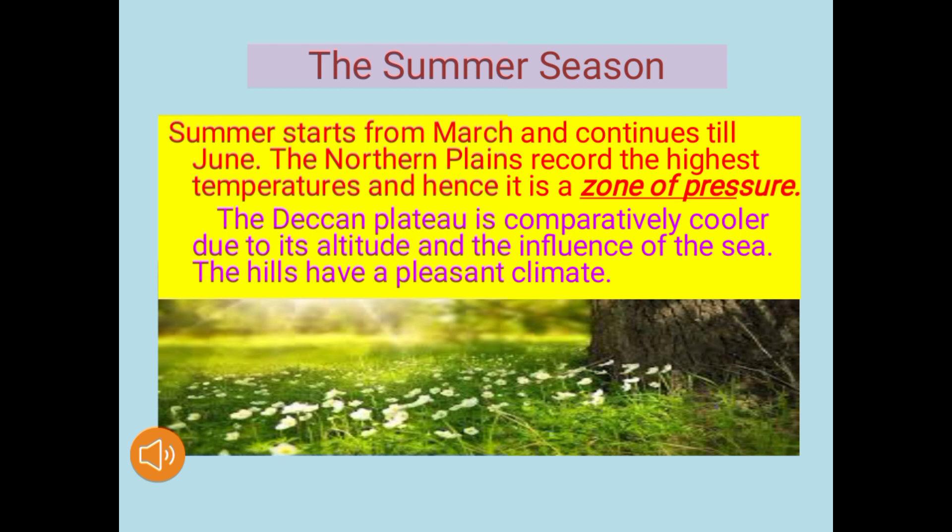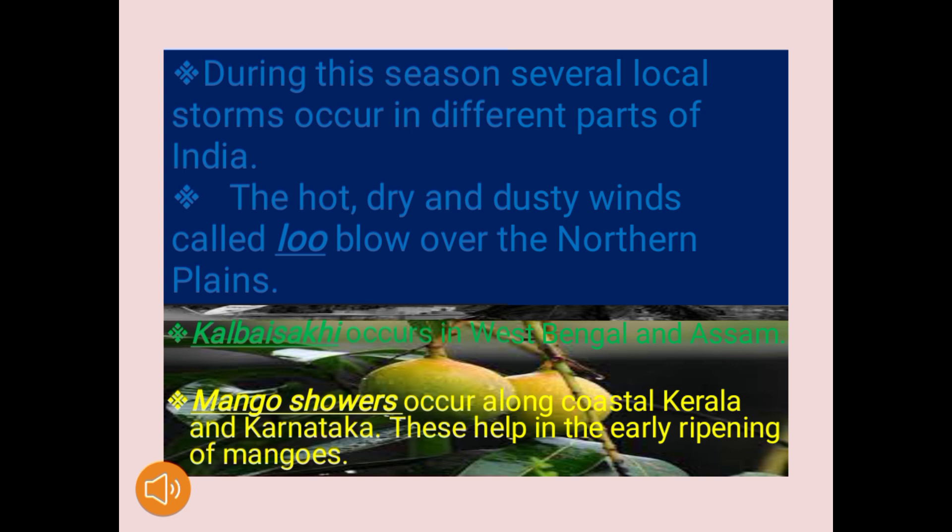Now let's move on to the summer season, which starts from March and continues till June. The northern plains record the highest temperatures and become a zone of low pressure. The Deccan Plateau is comparatively cooler due to its altitude and the influence of the sea. The hills have a pleasant climate. Several local storms occur during this season. The hot, dry and dusty winds called loo blow over the northern plains. Kalbaisakhi occurs in West Bengal and Assam, and mango showers occur along coastal Kerala and Karnataka, helping in the early ripening of mangoes. Remember these three terms: loo, Kalbaisakhi, and mango showers.